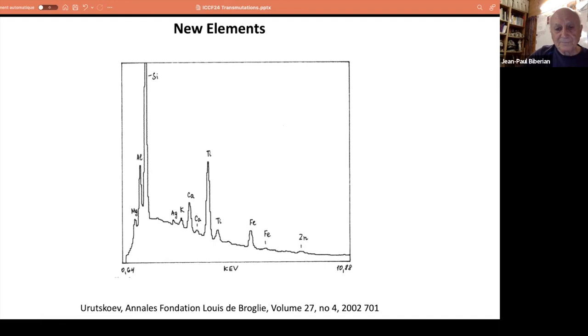Conclusion. Both fusion and fission products have been measured with various experimental techniques. Patterns are very identical, very similar. Helium-4 has been measured; it's in agreement with the D+D reaction regarding the energy produced. The D+D reaction would produce 23 MeV, and that's about what has been measured. It's not proved, but it's a good indication. Only in one case have we seen the disappearance of one element and the appearance of a new element—the one with the multi-layers by Iwamura, which is very exciting because here you see one element disappearing and a new one appearing. That's what we need to find more. More work needs to be done, especially with isotopic analysis, because there we are sure it's not pollution. Thank you very much for your attention.